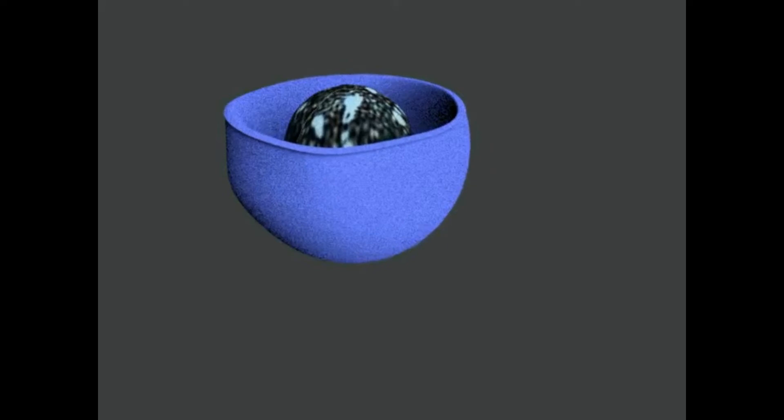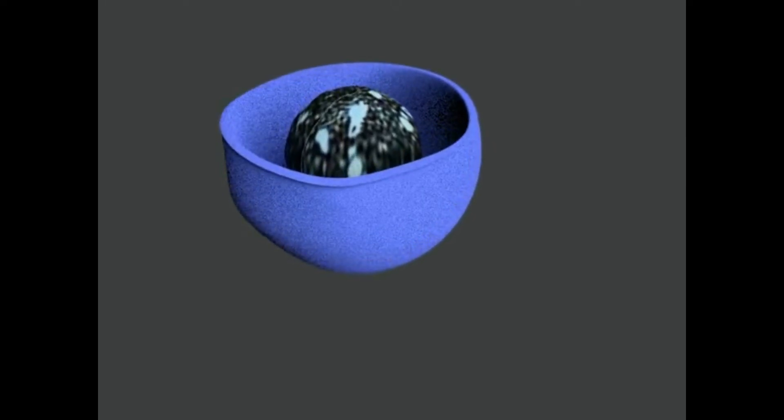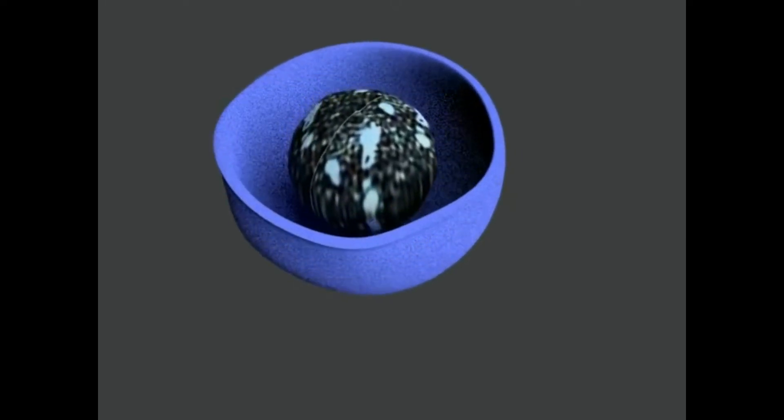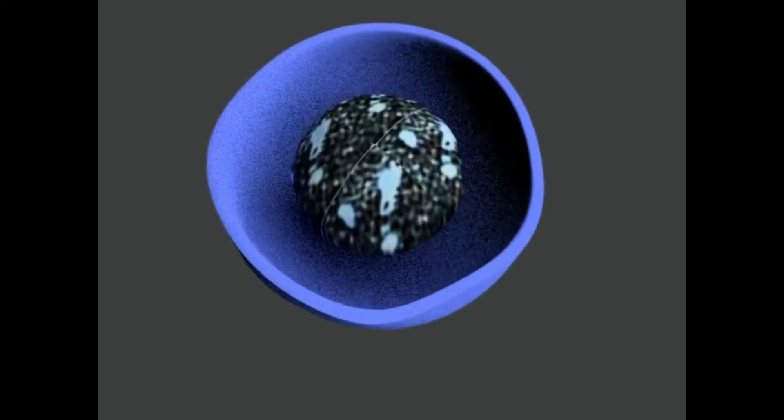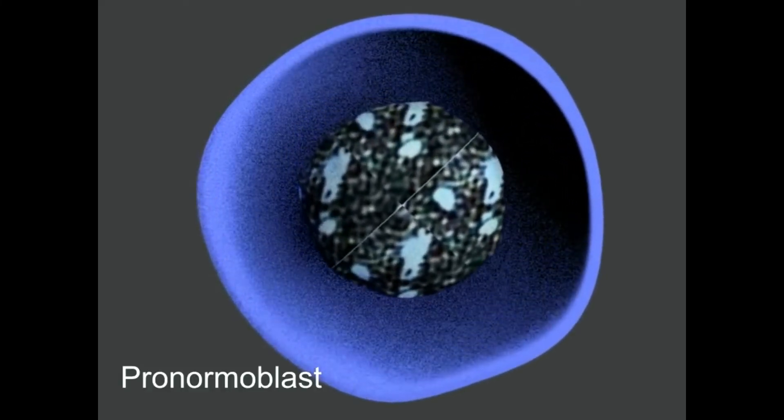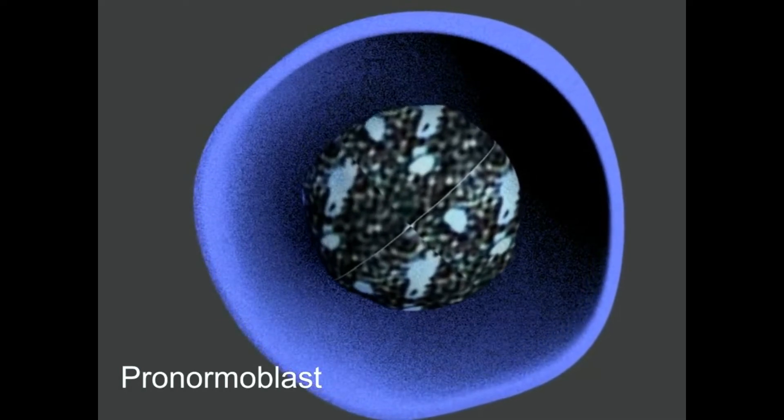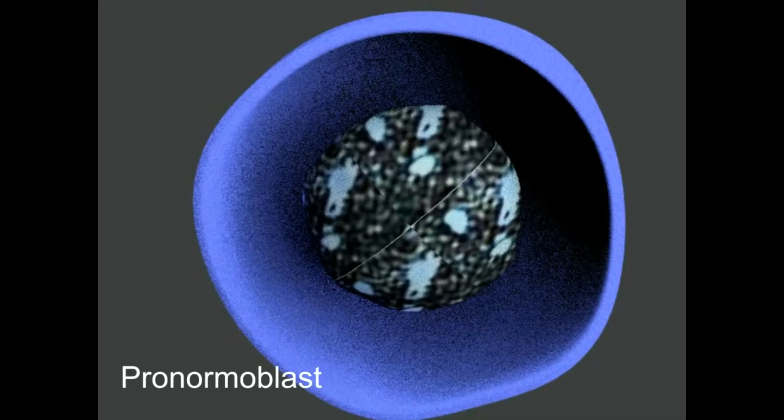Here, you are viewing a red precursor cell with basophilic cytoplasm and nucleus of normal maturation and size as for stage. This is an early erythropoiesis precursor called pronormoblasts.